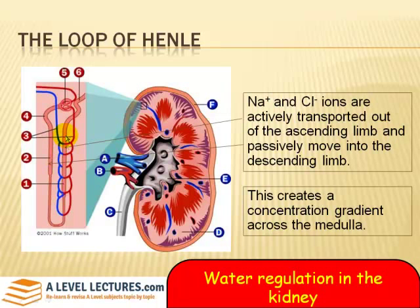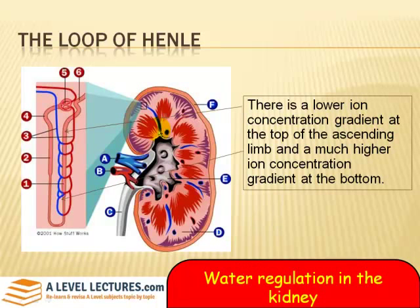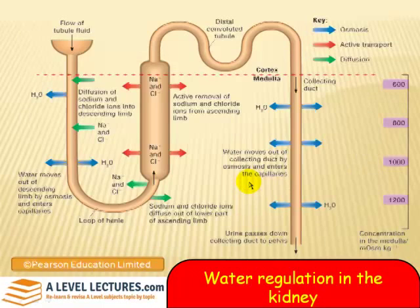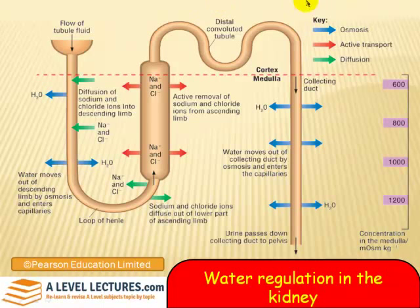What that does, as I said, is it creates a concentration gradient across the medulla. Much of the nephron is down here in the medulla. There is a lower ion concentration at the top of the ascending limb and a much higher ion concentration at the bottom. This is a more complex diagram showing what's going on — just follow it through very carefully. Notice the key up here.